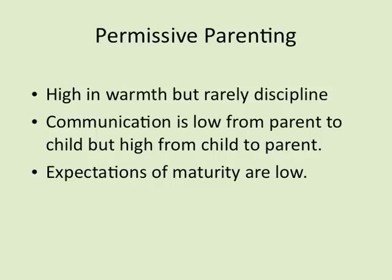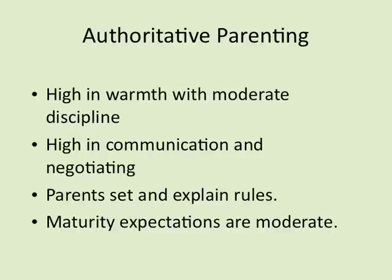Permissive parenting is high in warmth but rarely disciplined; communication is low from parent to child but high from child to parent, with very low maturity expectations. We might think a child whose parent doesn't care will become more responsible — actually the opposite is true; very few children raised by permissive parents become fully functioning and independent. Authoritative parenting is high in warmth with moderate discipline, high in two-way communication and negotiation. Parents set and explain the rules, with moderate maturity expectations appropriate to the child's age.